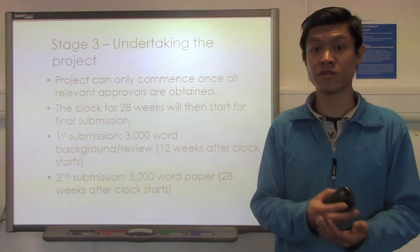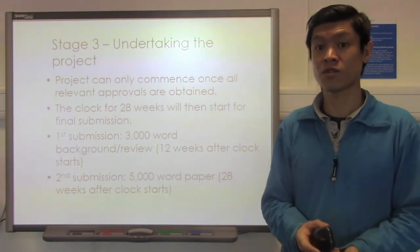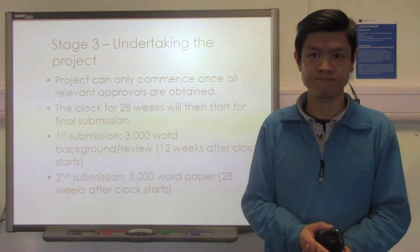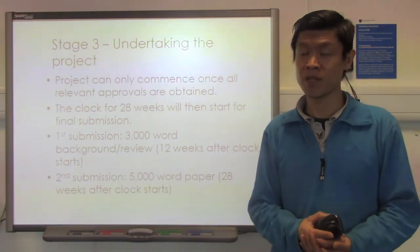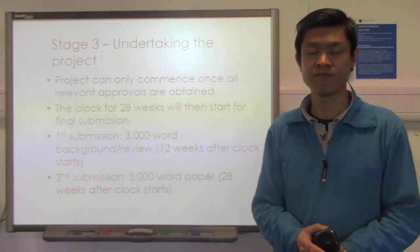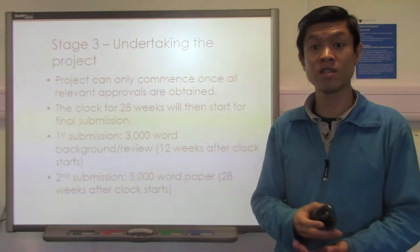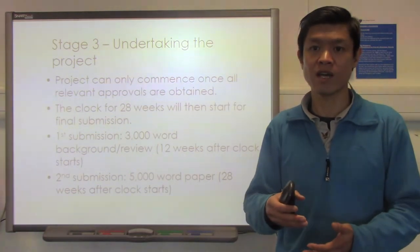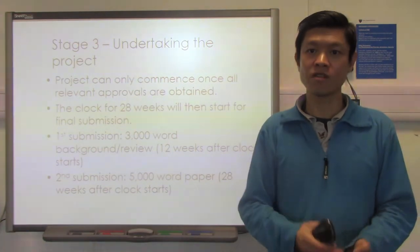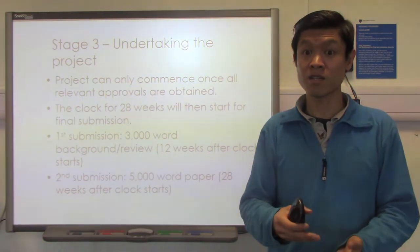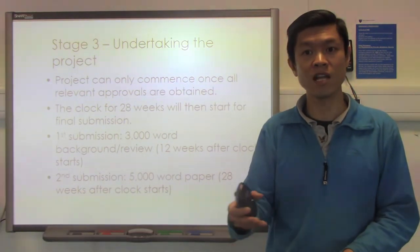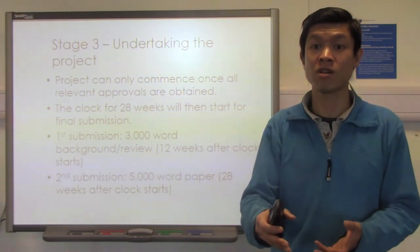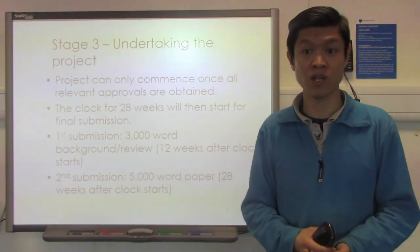Your very first submission — the intermediate product — is your 3,000-word background and review, which takes place 12 weeks after we started the clock. Bear in mind that this background and review contributes a certain percentage to your overall mark. The reason we've broken it down into two intermediate products is because we wanted students to build up momentum and gain different types of skills along the way. The background review develops academic skills in critical appraisal and evaluation of the literature, and builds logical reasoning skills to provide a rationale for why you want to answer your chosen research question.